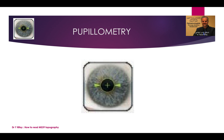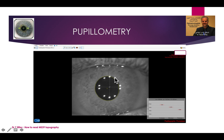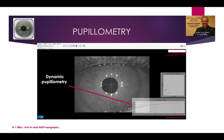You can also use the MS-39 for pupillometry, which is very interesting. You study the pupillometry in scotopic, mesopic, and photopic conditions. For example, the scotopic pupil is 7.5 millimeters and the photopic is 4.62 millimeters. There is also dynamic pupillometry, which calculates the difference and the speed of pupillary movement — the photomotor reflex.